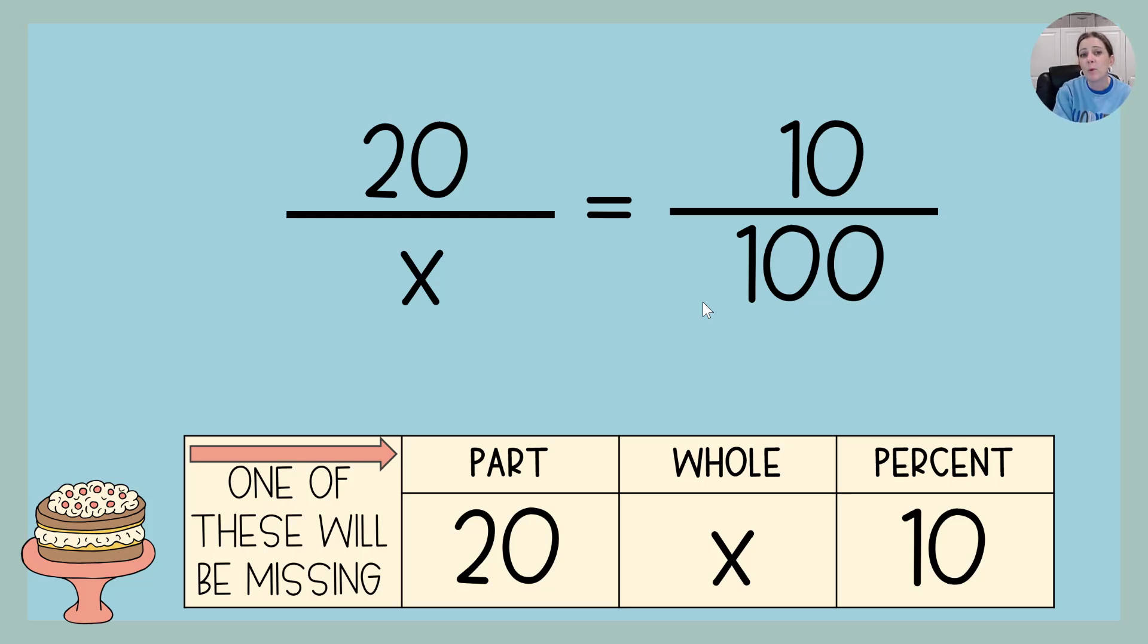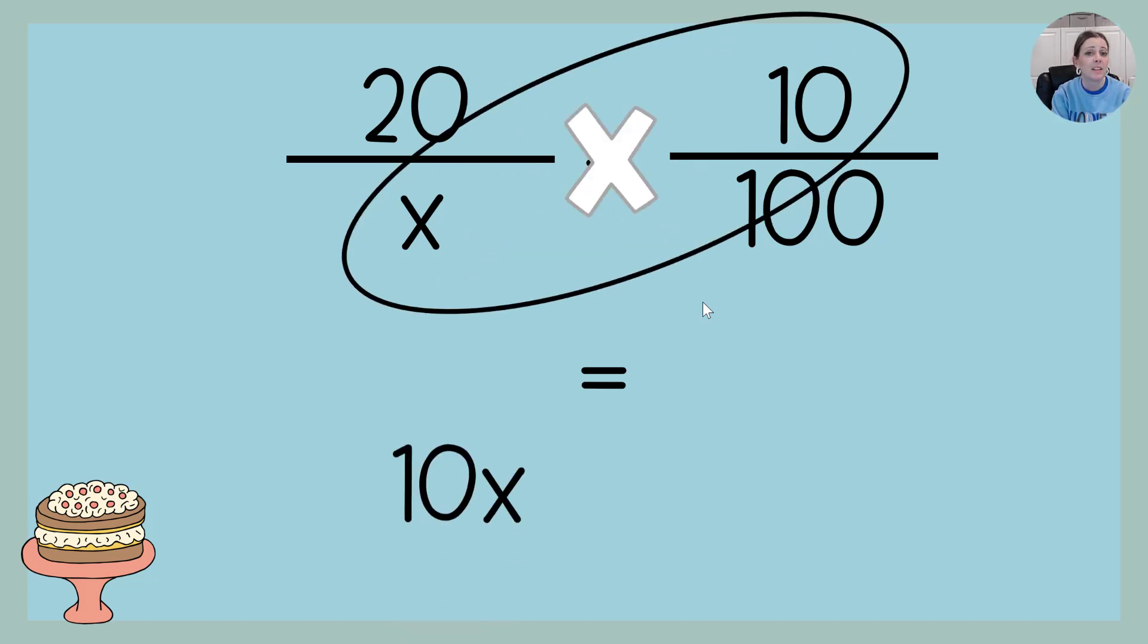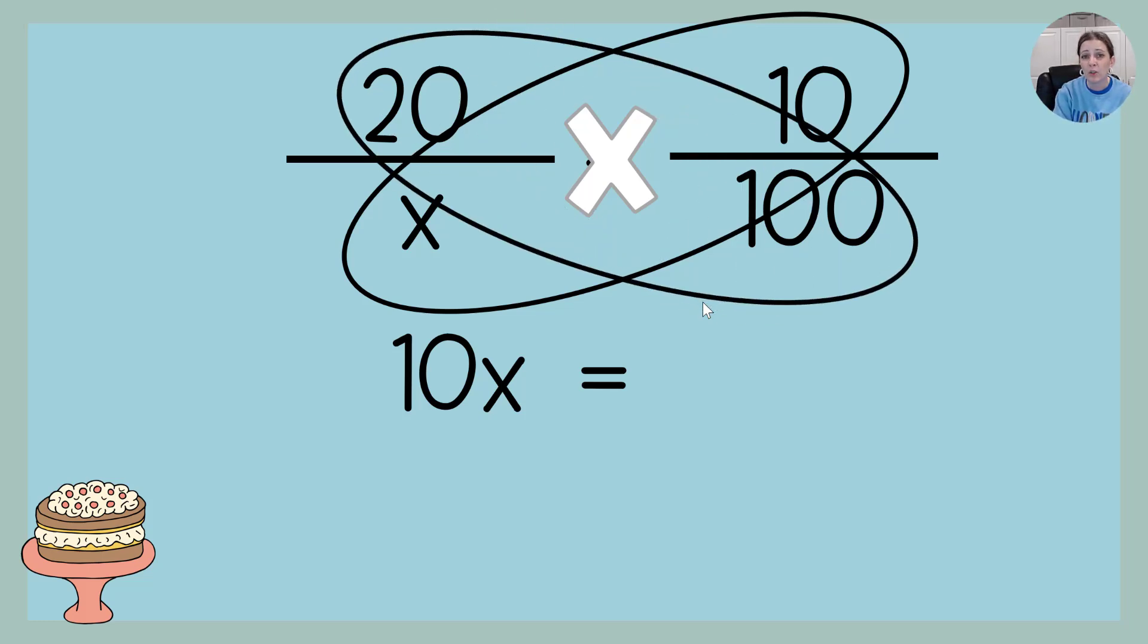Now we're going to use some cross multiplication or what is sometimes called the butterfly method to figure out what X is. So 10 times X is 10X because we don't know what X is, and 20 times 100 is 2,000. So this means 10 times something equals 2,000.